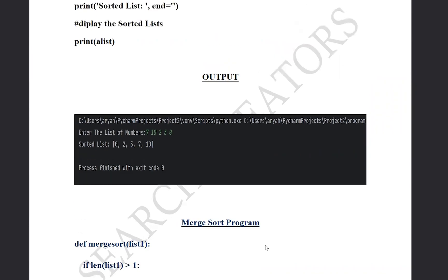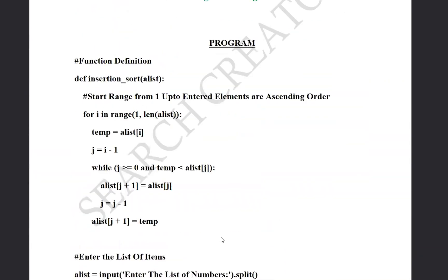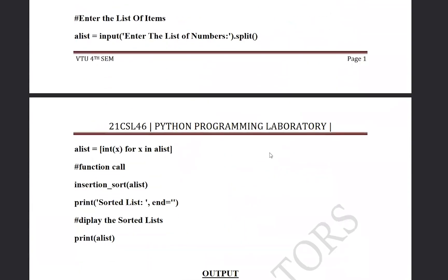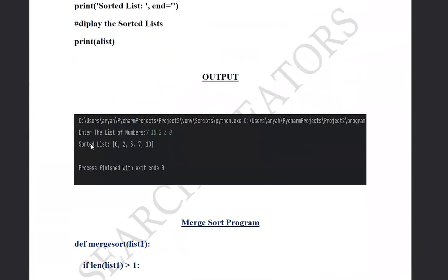Hi guys, welcome to Search Creator YouTube channel. In this video we will learn the Python programming laboratory. The program name is write a Python program to implement insertion sort. You saw in the last video how to implement insertion sort, and now we see merge sort using list. This type of list, sorted list 0, 1, 3, 7, 8, this is called list.